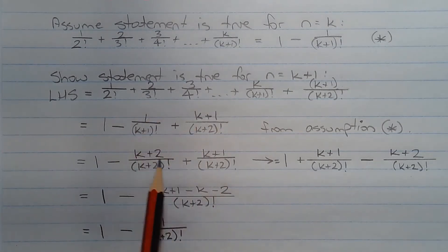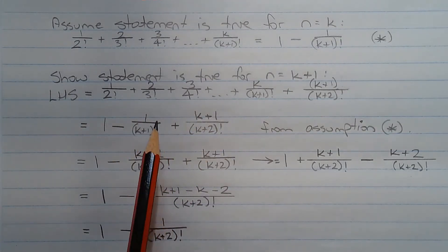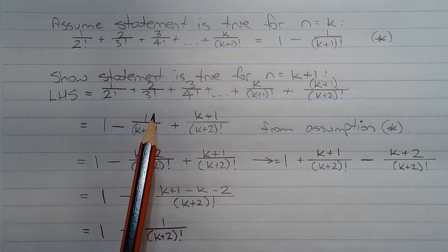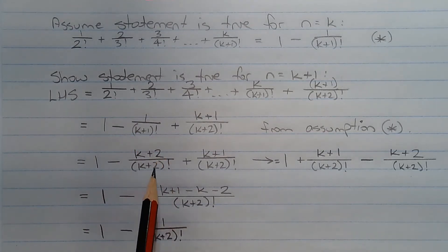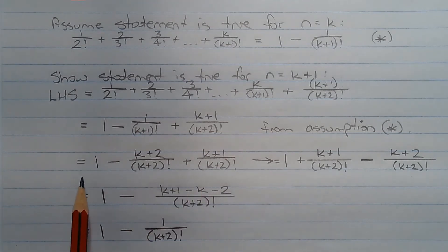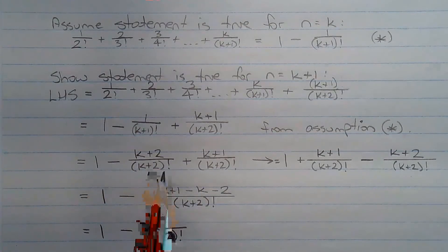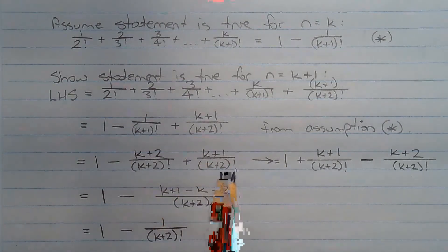Now combining these two fractions together by finding a common denominator: if we multiply the fraction 1 over k plus 1 factorial by k plus 2 over k plus 2, we get k plus 2 over k plus 2 factorial. So that way we have a common denominator between the two fractions. That equals 1 minus k plus 2 over k plus 2 factorial plus k plus 1 over k plus 2 factorial.